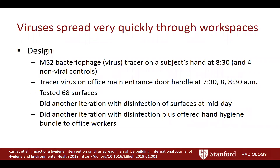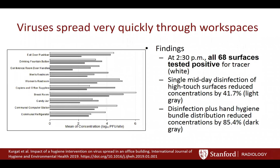Because the virus is so persistent, it spreads very quickly through workspaces. A 2019 study painted a benign bacteriophage tracer on one subject's hand and on a single doorknob in the morning, then tested surfaces at 2:30 p.m. All 68 surfaces tested positive, including the break room coffee pot handle, candy jar, doorknobs, restroom, and communal refrigerator. After a single midday disinfection, high-touch surface concentrations were reduced by 42%, and adding hand hygiene reduced concentrations by 85%.